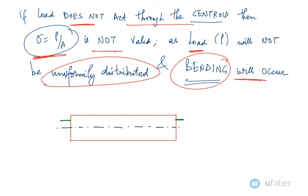This means in order for this to be applicable, the load should always act through the centroidal axis. In this case, the load is acting a little bit offset from the centroidal axis. Let us say this is the eccentricity E.